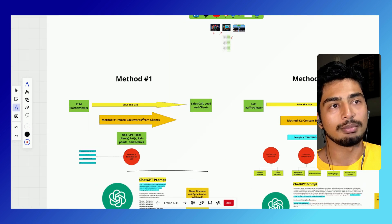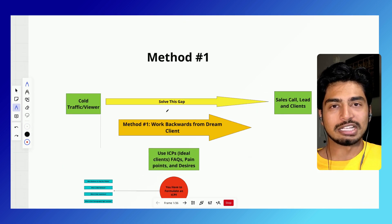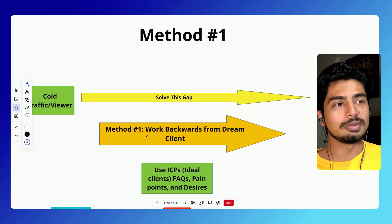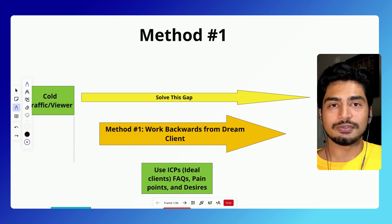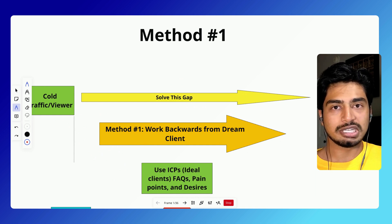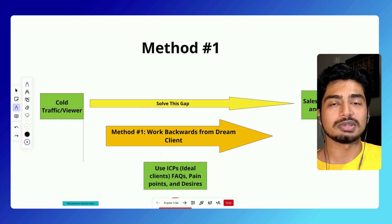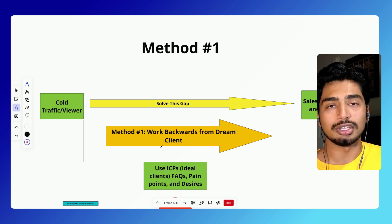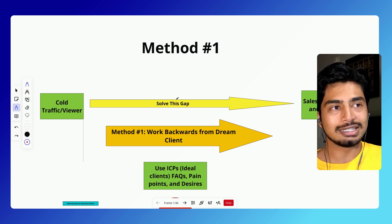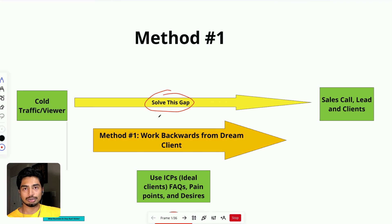Let's jump right into method number one. Method number one is going to be working backwards from a dream client. I'm going to give you the ChatGPT prompt and explain what this means in a second. But first, you have to understand why content works specifically on YouTube. Content solves this crucial gap, which I'm going to label trust.